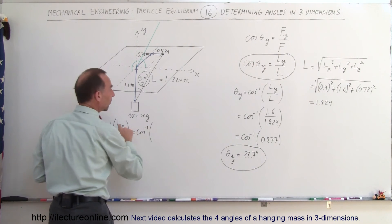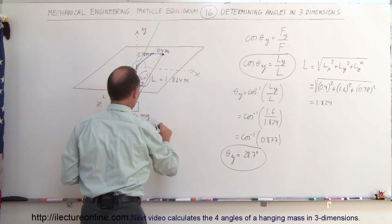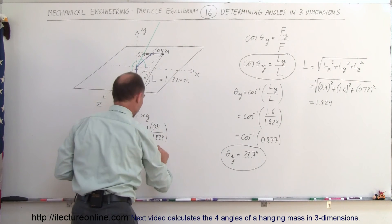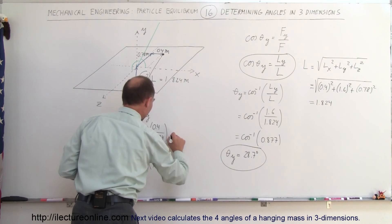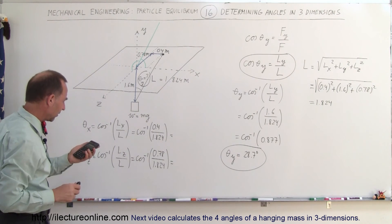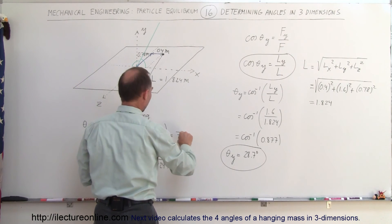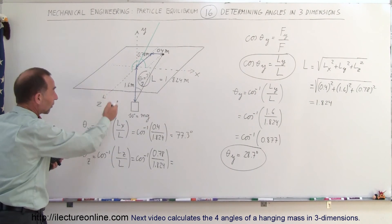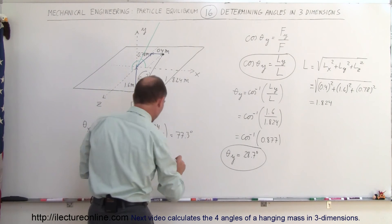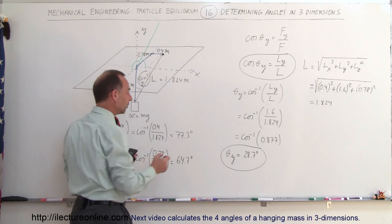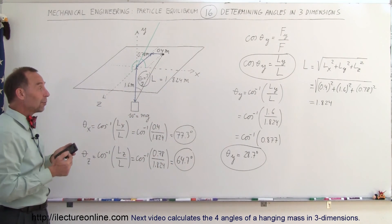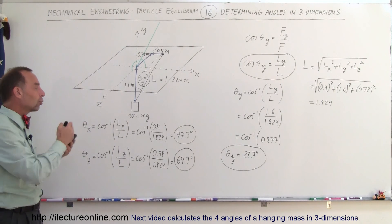So the arccosine of L sub x — which is 0.4 — divided by 1.824 gives us theta sub x equals 77.3 degrees. And the arccosine of L sub z — which is 0.78 — divided by 1.824 gives us theta sub z equals 64.7 degrees. So there are all three angles: 28.7 degrees with respect to the y-axis, 77.3 degrees with respect to the x-axis, and 64.7 degrees with respect to the z-axis.